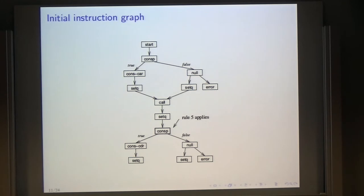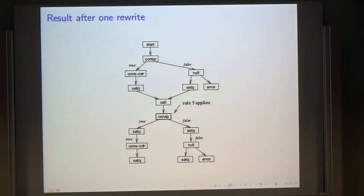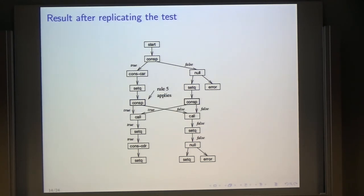Rule five applies, which means you can interchange the order between the cons-p and the seq that precedes it — splitting the seq into branches. That gives us this situation. Then the same rule applies again, allowing us to interchange the call and the cons-p, and the type information is preserved in the outgoing arcs. Now we can duplicate the call into the two branches. Then a different rule applies because the cons-p has two predecessors: we duplicate the cons-p for as many predecessors as it has. It's very simple and doesn't change semantics.